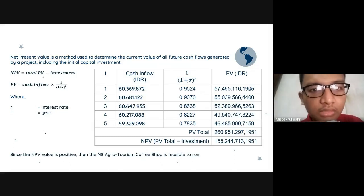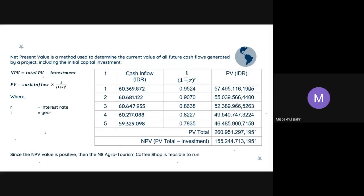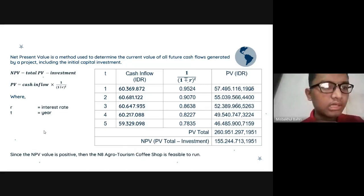The NPV equals PV total minus the investment, which equals 155,244,713,195. Since the NPV value is positive, the N8 Agro-Tourism Coffee Shop is feasible to run.